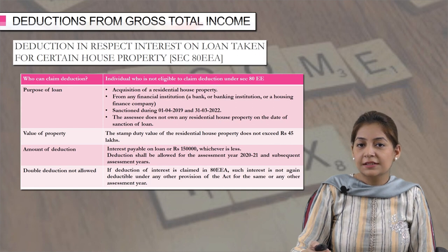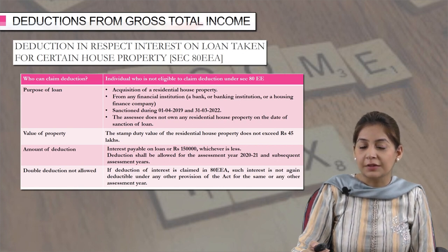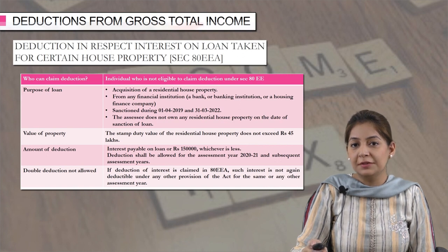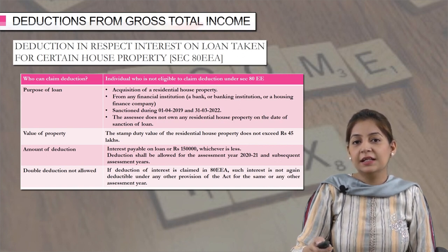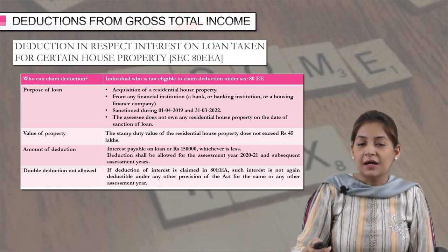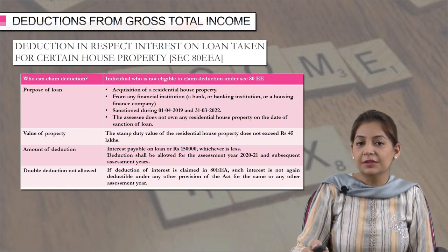Similarly, we have the next section that is 80EEA. This is in respect of interest on loan taken for certain house property. What is the difference between 80EE and 80EEA? The conditions are the same — the loan must have been taken for acquisition of a residential house property and can be taken from any financial institution. However, the loan must be sanctioned during the period 1st April 2019 to 31st March 2022.